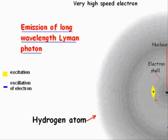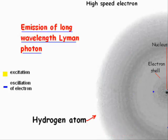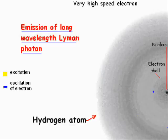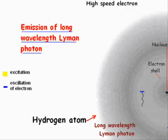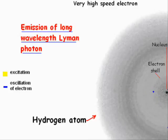If the nearer transubrations shell to which the electron has jumped is simultaneously excited, that transubrations shell oscillates at its natural frequency and causes the emission of a Lyman series photon of longer wavelength. The longer wavelength is due to the lower level excitation of the electron shell, followed by the electron jumping into a nearer transubrations shell and the excitation of that transubrations shell.